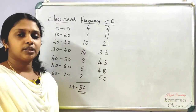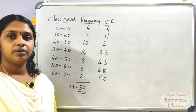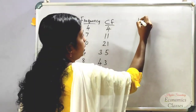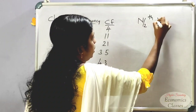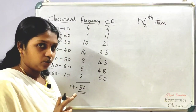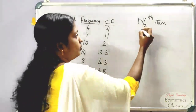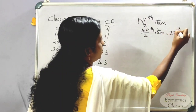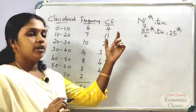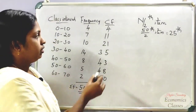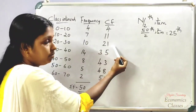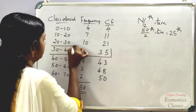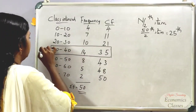To select the median class in a continuous series, we find the n/2 item. The total frequency is 50, so 50 divided by 2 gives us the 25th item. We look at the cumulative frequency — 25 falls in the class where the cumulative frequency first reaches 35, so that is the median class.